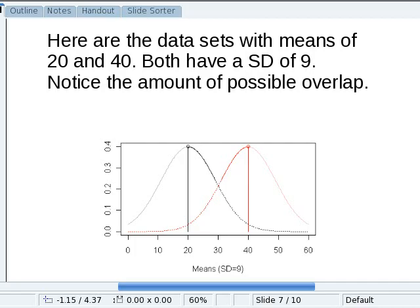Here are the data sets with means of 20 and 40. Now, if we have a standard deviation of 9, this part here shows one standard deviation above the mean, and this is one standard deviation below the mean of the red group. Notice the possible amount of overlap here. So it's possible because one standard deviation is 34% of our distribution. It's quite possible that the means could be a lot closer than what our observed means of 20 and 40 are.